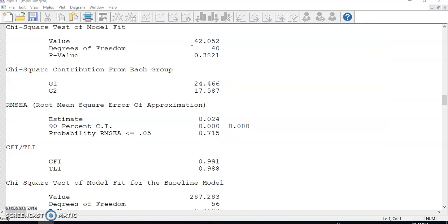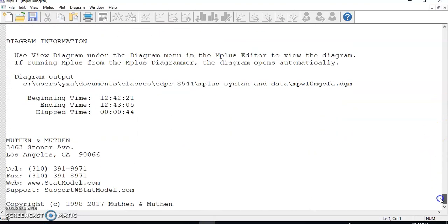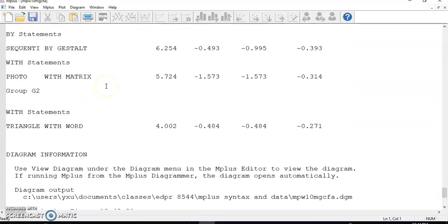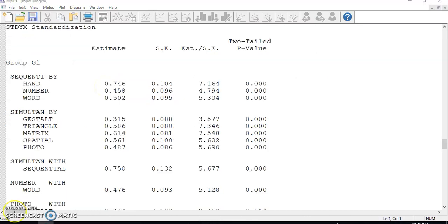This time, the model chi-square decreased to 42.1. The other model fit indices are good, too, and there are no further modification indices to use.